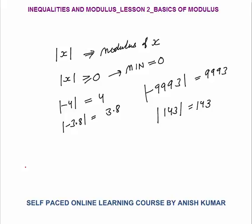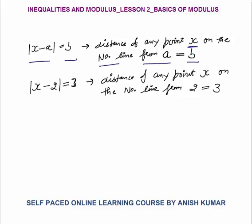First we will understand the logical way of understanding the modulus, then we will do the conceptual part. The key concept is: modulus of X minus A equals B means that the distance of any point X on the number line from point A is equal to B. When I say modulus of X minus 2 equals 3, it simply means the distance of any point X on the number line from 2 is equal to 3.